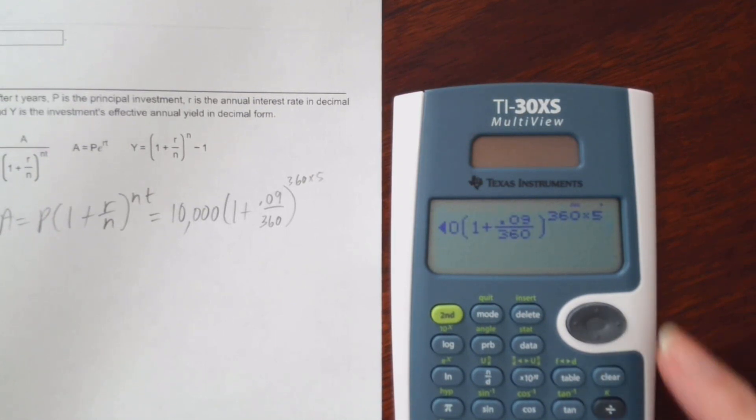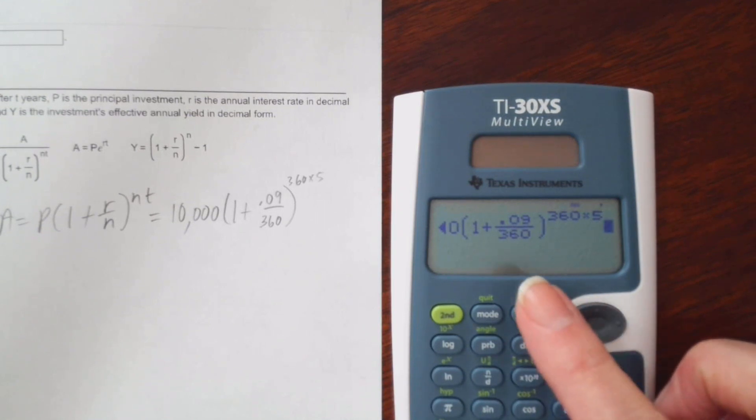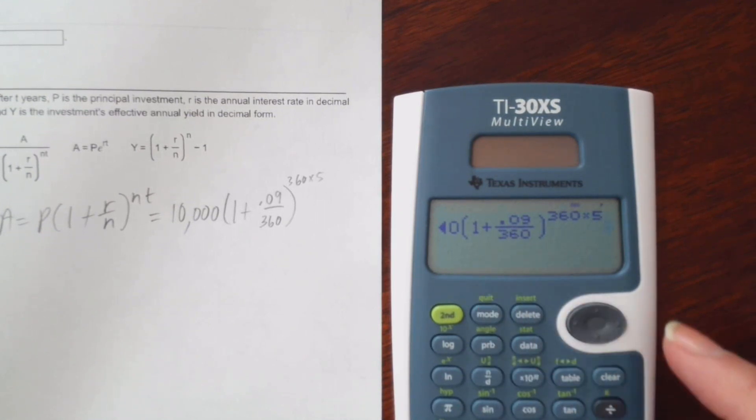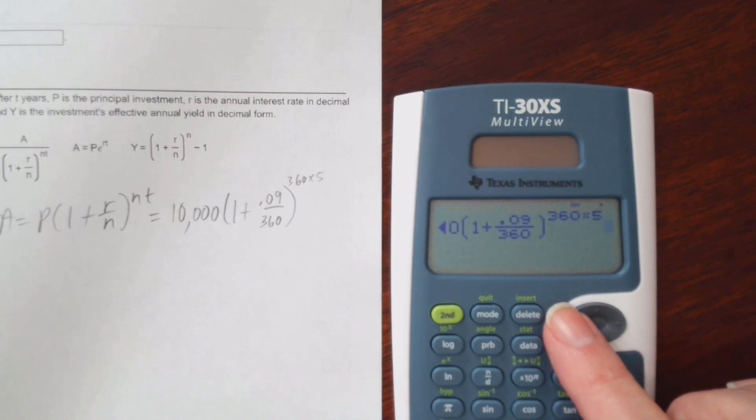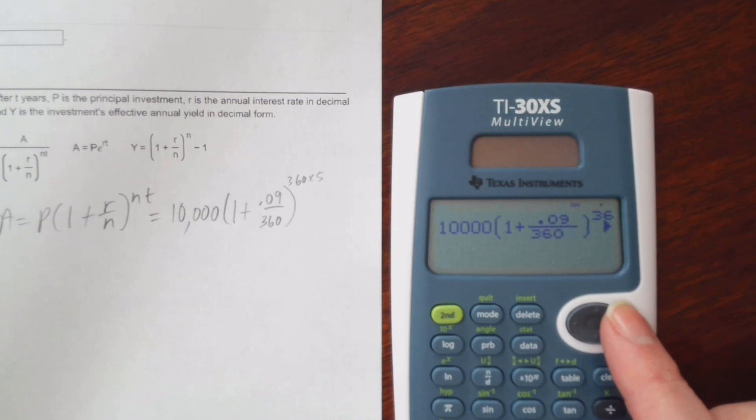And then I arrow out. And you can see everything except for the 10,000, you could always arrow left if you want to see that part. But it looks just like it does on paper. I guess I can do that real quick. There's the 10,000.